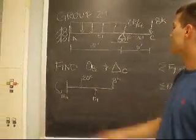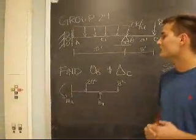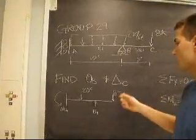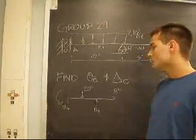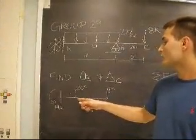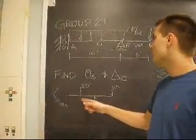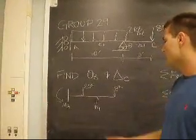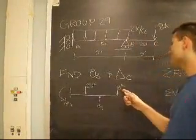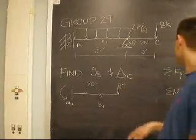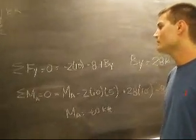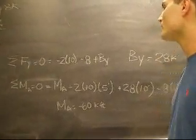In order to find theta B and the deflection at C we are going to use the conjugate beam method. Here we have our free body diagram showing a moment at A, a 20 kip force in the middle of the beam between A and B, a B support pointing up, and the 8 kip force pointing down.